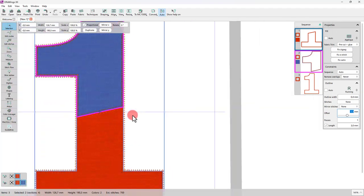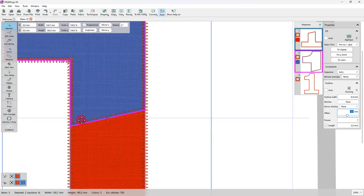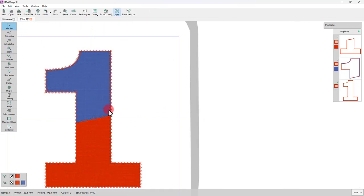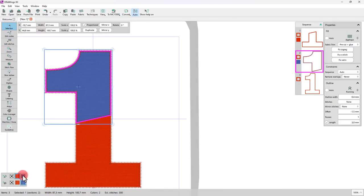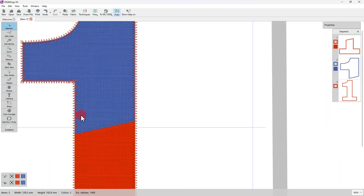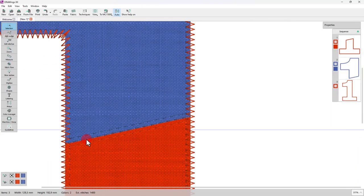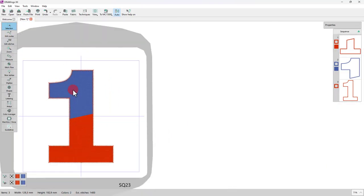Now, for each of the applique parts, set the same outline color as the fill. Actually, what we're trying to do here is to match the outline color to the fabric color so that the holding stitches are practically invisible.